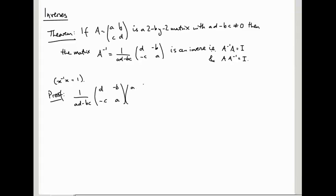So one over AD minus BC, D minus B minus C, A, times ABCD, equals one over AD minus BC times DA minus BC, DB minus BD...